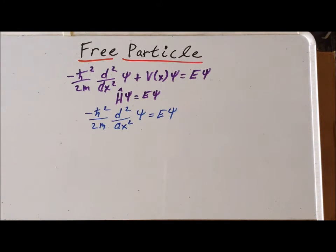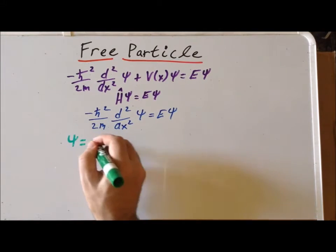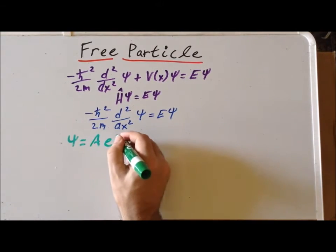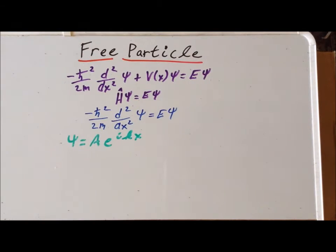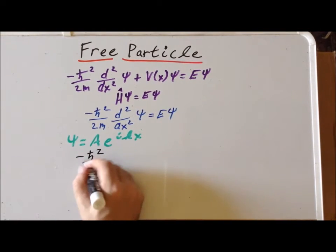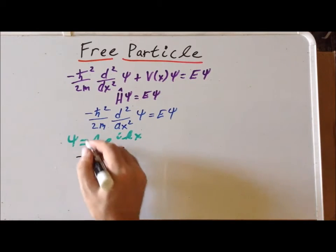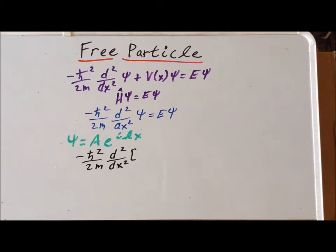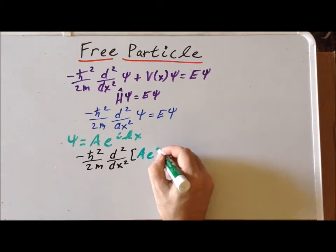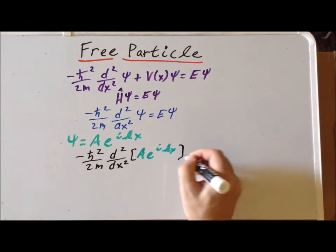Now we'd like to try out potential wave function solutions of this equation. One version we can use is the following: psi is simply going to be some constant A times e to the ikx. We want to see if this actually is a true solution of the Schrödinger equation. To test, we're going to substitute it into the equation and solve. That gives us minus h-bar squared over 2m times the second derivative with respect to x of our wave function, which is A times e to the ikx, equal to E times psi.